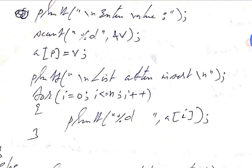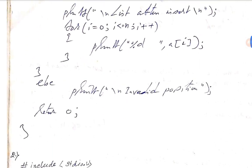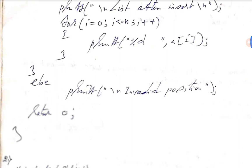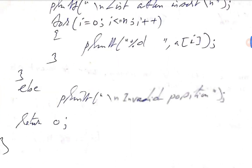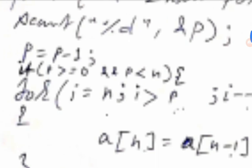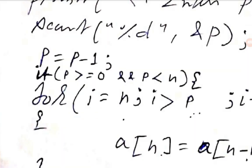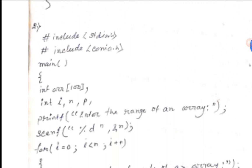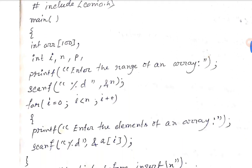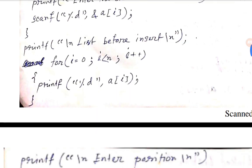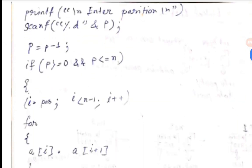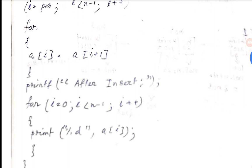We use printf to display the output. If the position is invalid, we print 'invalid position'. This handles the error case in the program. I will show you how to do this.